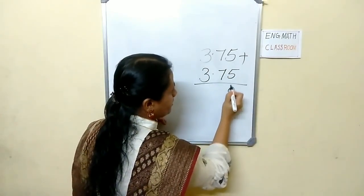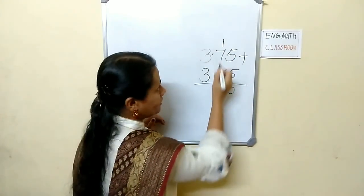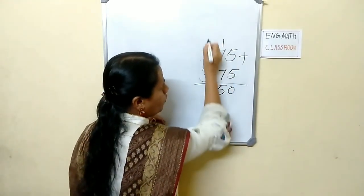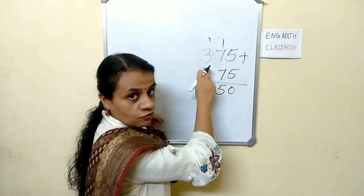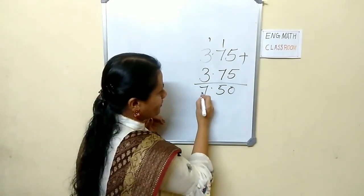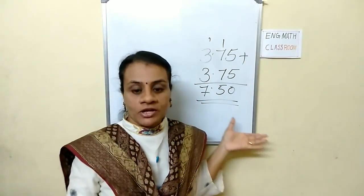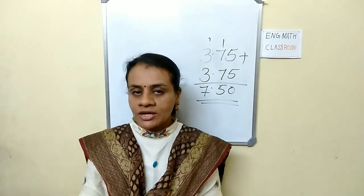5 plus 5 is 10, carry 1. 7 plus 7 plus 1 is 15, carry 1. 3 plus 3 plus 1 is 7. You get 7.5. 7.5 is easy to take from our ruler.